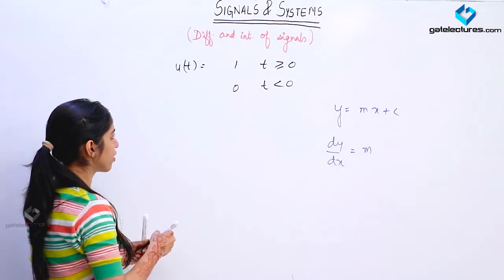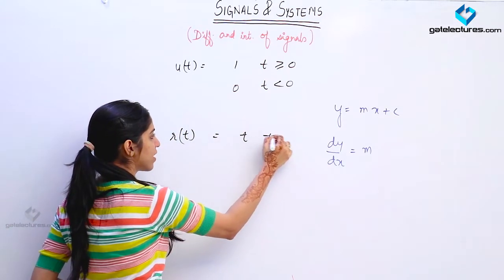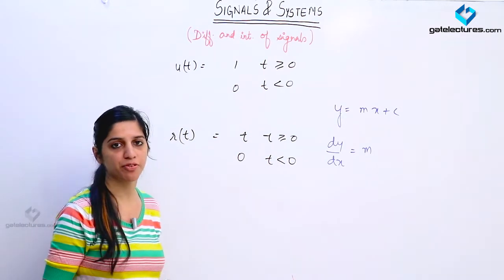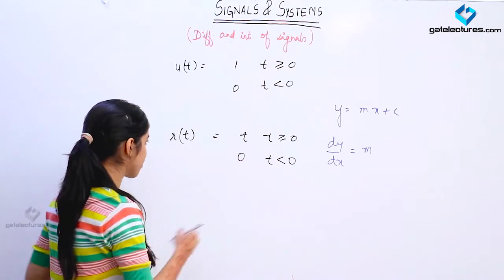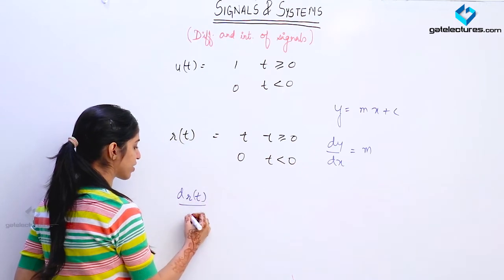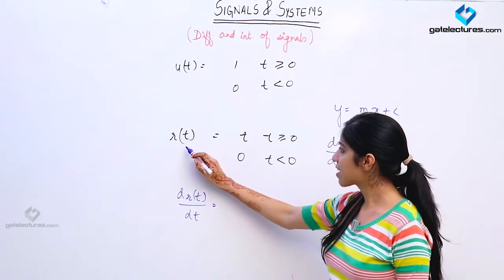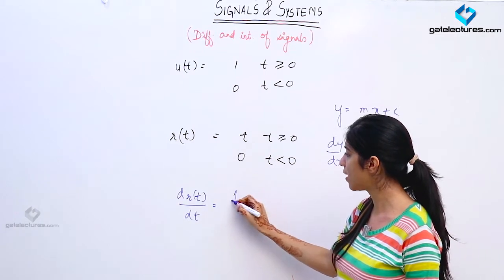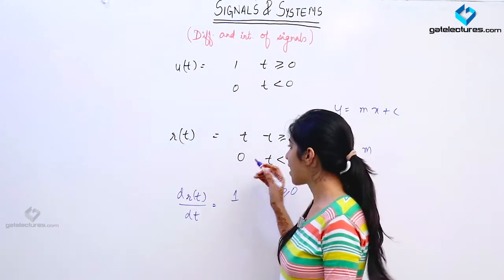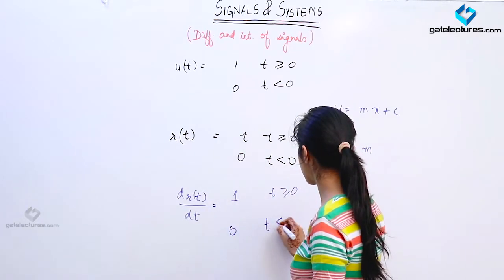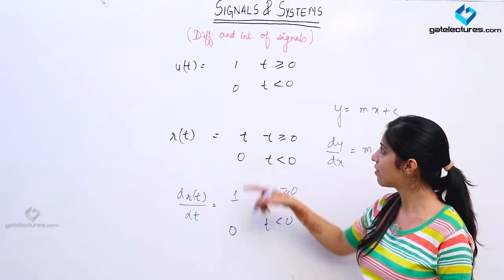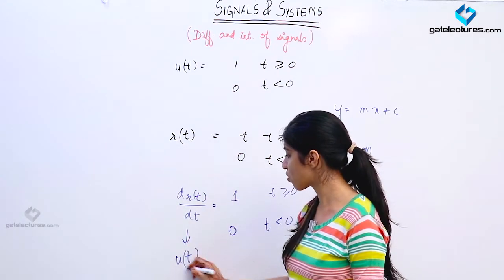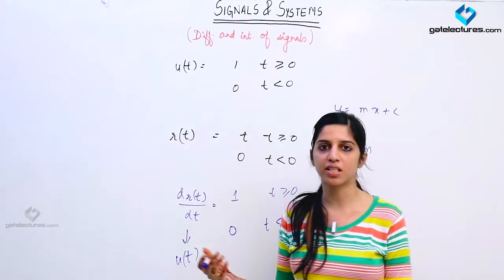Now look at the definition of the ramp function r(t). We define the ramp function such that r(t) equals t for all values of t greater than or equal to 0. When you differentiate this ramp function, differentiating t gives 1 for all values of t greater than or equal to 0, and it was already 0 for values of t less than 0, so that remains as it is. This definition matches exactly with the definition of u(t). That is why we say that u(t) is the differentiation of the ramp function — the unit step function can be obtained by differentiating the ramp function.